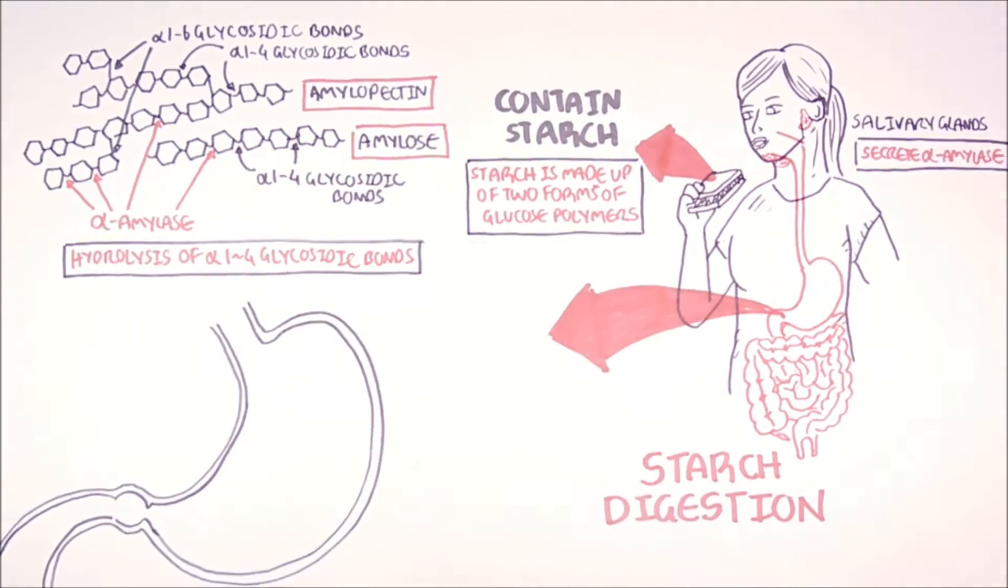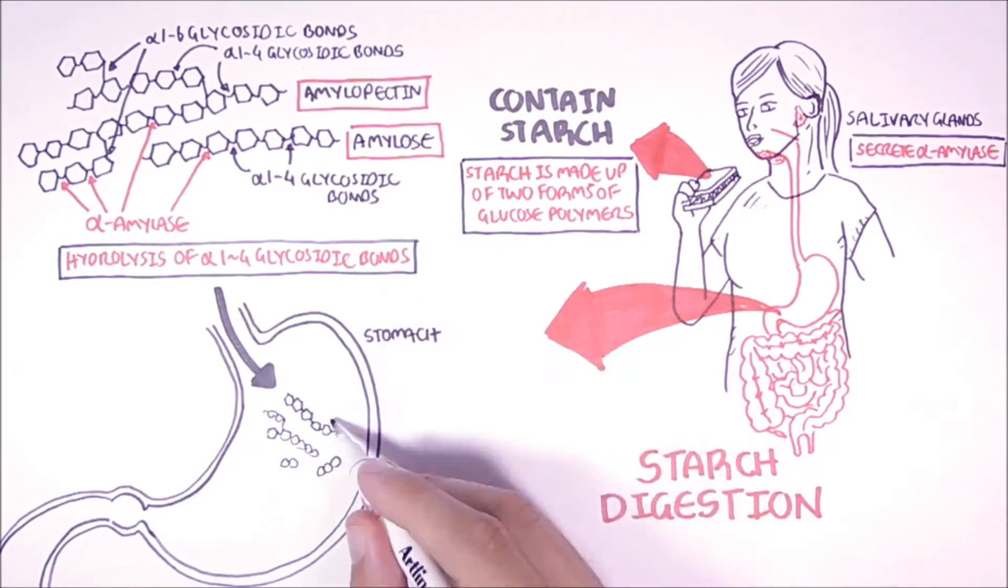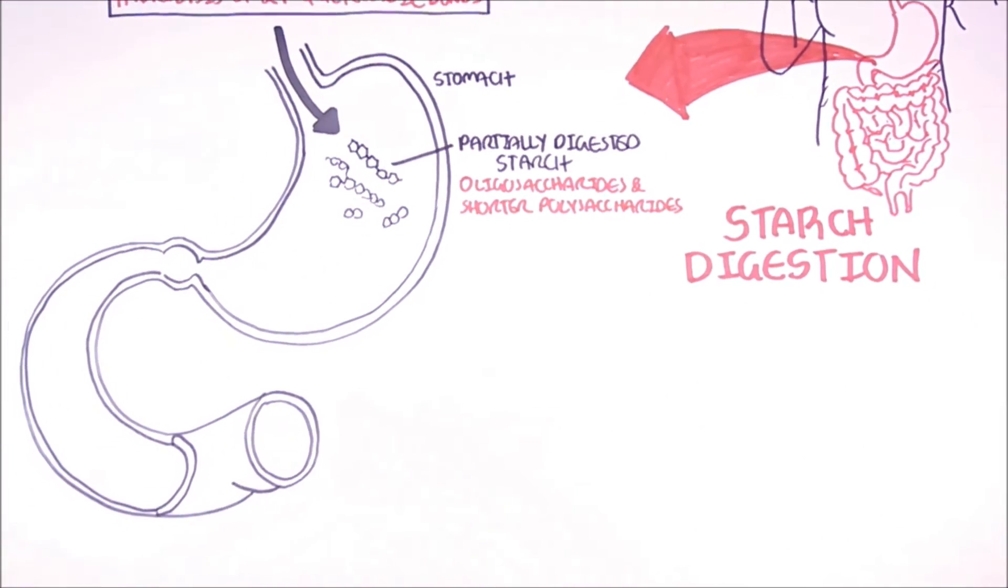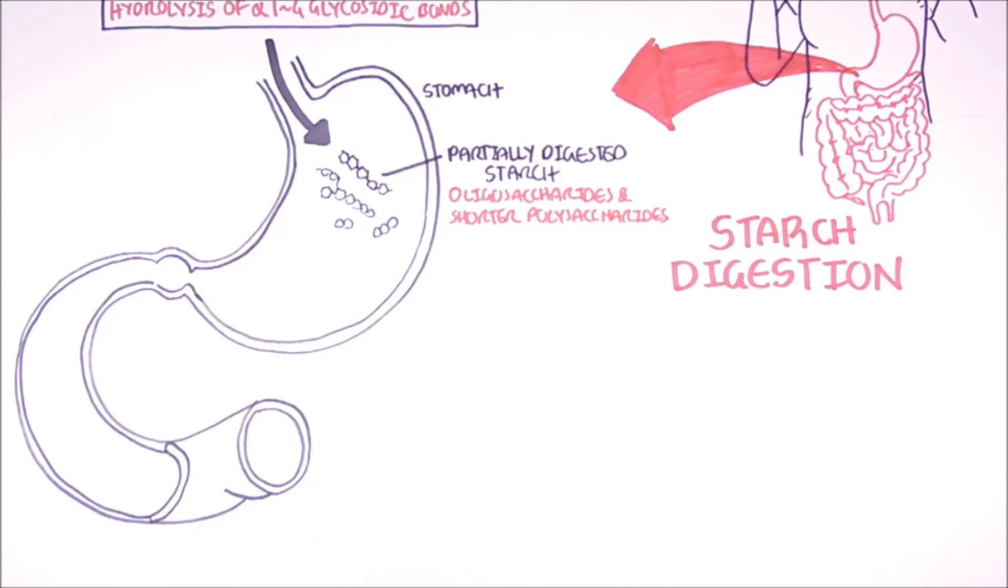Starch is only partially hydrolyzed into oligosaccharides and shorter polysaccharides once it reaches the stomach, because once the starch comes down the esophagus into the stomach, the amylase becomes inactivated.